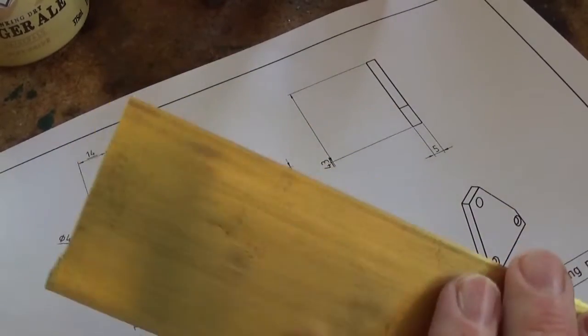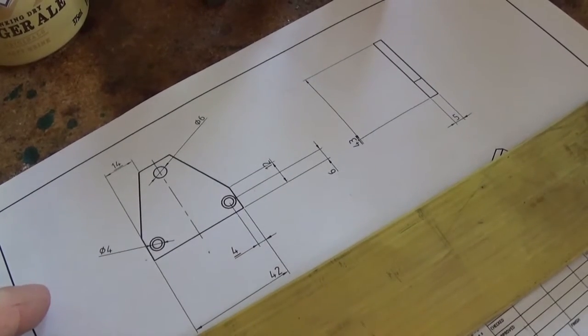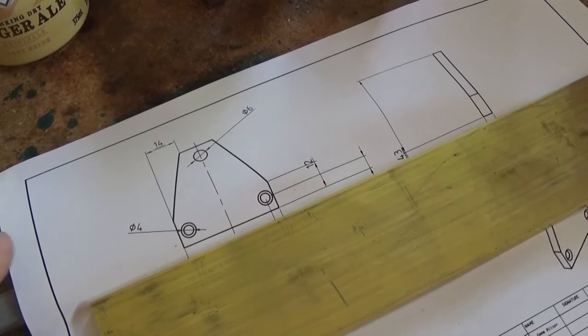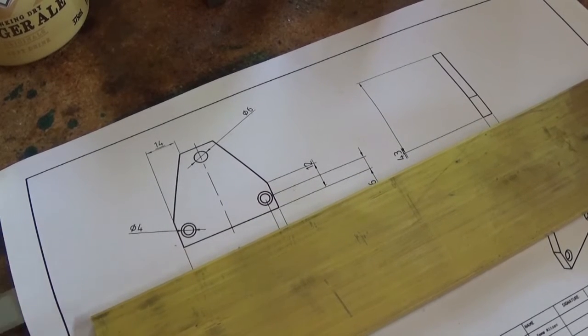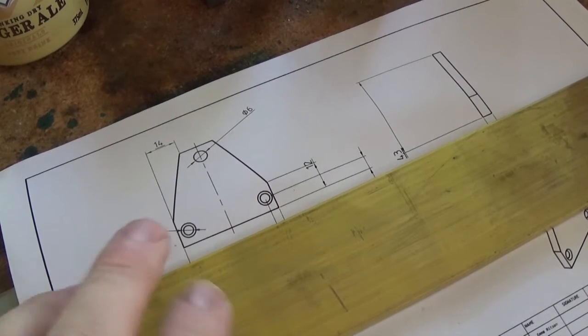I've got a bit of 50 by 5. What I'm going to do is cut two pieces nice and square, give them a sand up and sweat them together and mark them out and machine them all and pull them apart later because they've got to match. So that's what we're going to do. I'll cut two pieces off here.